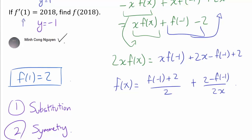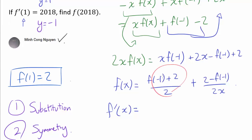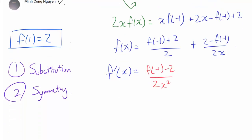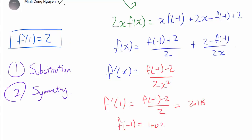From here the solution is straightforward. We know f'(1) = 2018, and f(−1) is a constant. Differentiating f(x) gives f'(x) = (f(−1) − 2)/(2x²). So f'(1) = (f(−1) − 2)/2 = 2018, which tells us f(−1) = 4038.